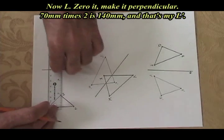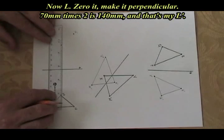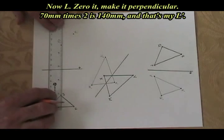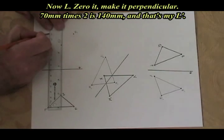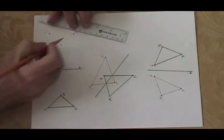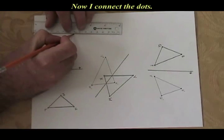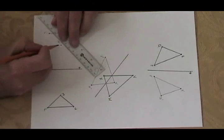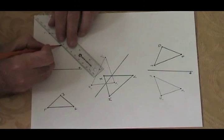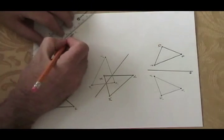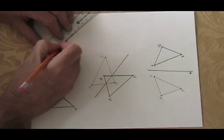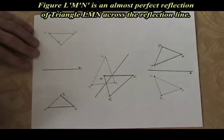And L. Zero it. Perpendicular, 70 millimeters. Times 2 is 140. I put a dot. L'. And I connect the dots. Figure L'M'N'.